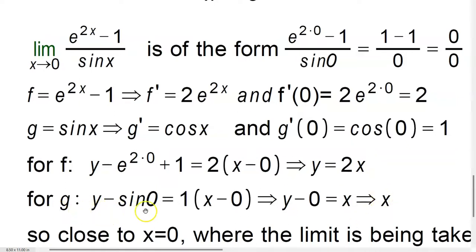Now for g, you'll have y minus sine of 0 equals 1 times x minus 0, so it's y minus 0 equals x, or in other words, y just equals x. So now we know we have the two linearized versions of the functions, 2x for e to the 2x minus 1, and x for sine x.